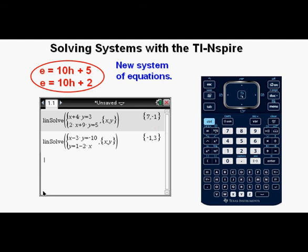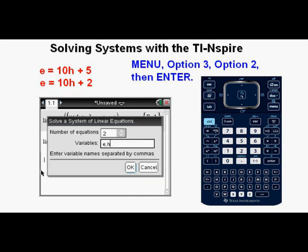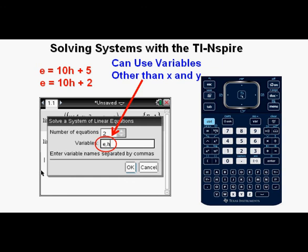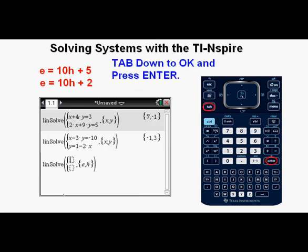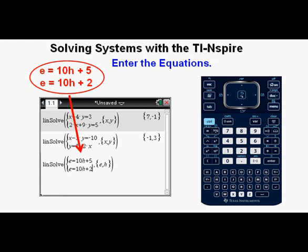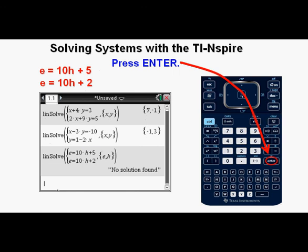Now we're going to enter this system of equations. E equals 10h plus 5 and E equals 10h plus 2. We get to this view by going to the menu, picking option 3, algebra, then option 2, solve system of linear equations, then enter. We change the variables from x and y to e and h. Part of what we're doing here is to show that we can use variables other than x and y. Tab down to OK and press enter. Enter the equations as shown. Press enter.